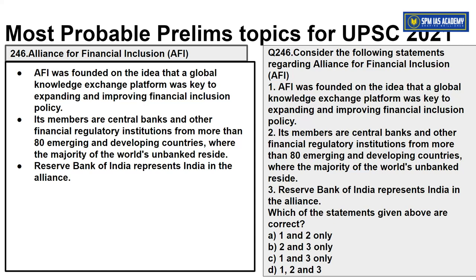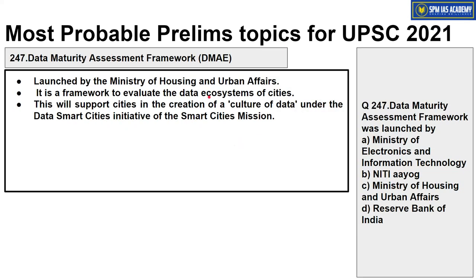In our prelims segment, we will cover topic numbers 246 to 250. Topic 246: Alliance for Financial Inclusion — founded on the idea of a global knowledge exchange platform to expand and improve financial inclusion policy. Its members are central banks and financial regulatory institutions from more than 80 emerging and developing countries; the Reserve Bank of India represents India in this alliance. Topic 247: Data Maturity Assessment Framework — launched by the Ministry of Housing and Urban Affairs to evaluate the data ecosystem of cities, supporting cities in creating a culture of data under the Data Smart Cities initiative.